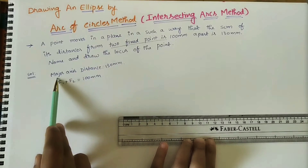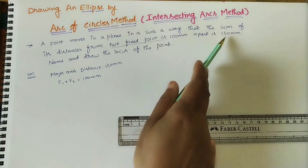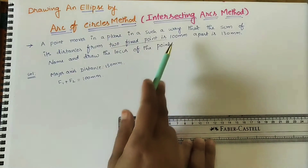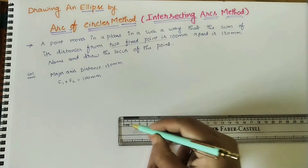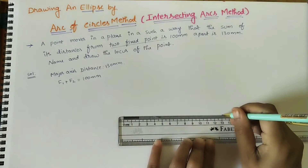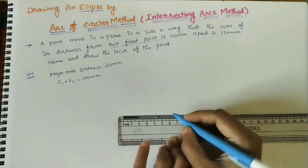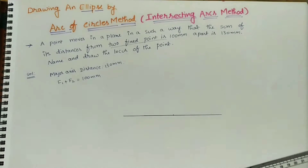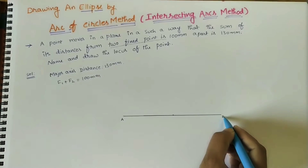First, mark the given data. The major axis length is 130 mm and the sum of distances from the two fixed points F1 plus F2 is 100 mm. The major axis is 130 mm, so initially mark the endpoints at 13 cm, draw the major axis, and mark the middle point at 6.5 cm. Label the endpoints of the major axis as A and B.